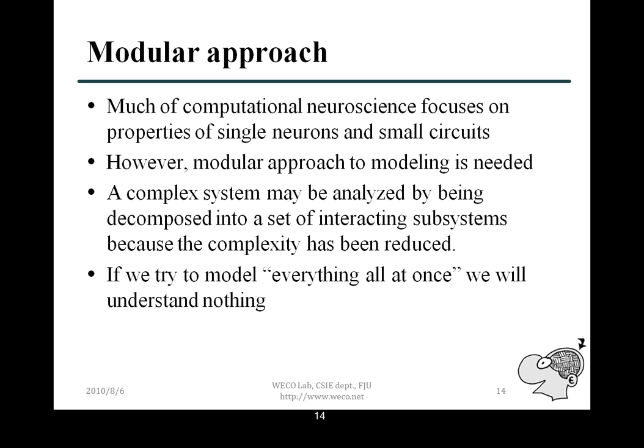The next is the modular approach. Much of computational neuroscience focuses on properties of single neurons and small circuits. In the blueprint or C2, they use the approach at the neural level. However, a modular approach to modeling is needed because a complex system may be decomposed into a set of interacting subsystems, so the complexity is reduced.